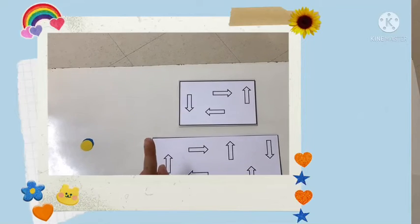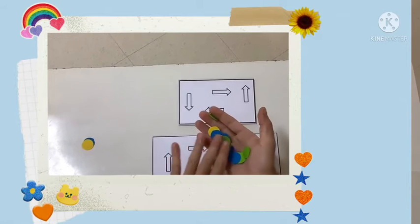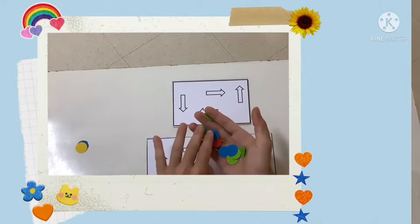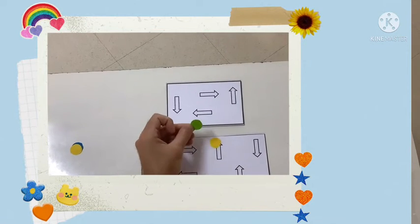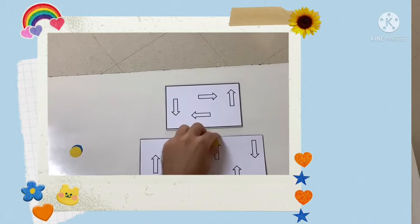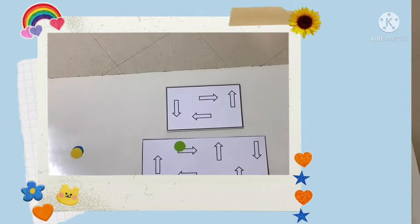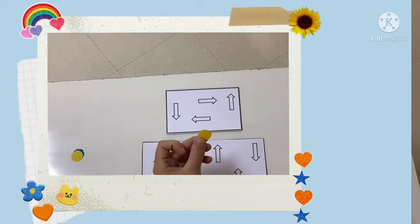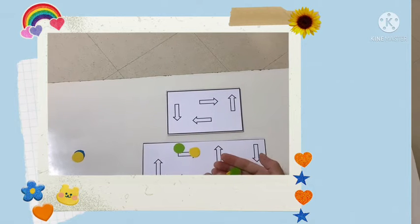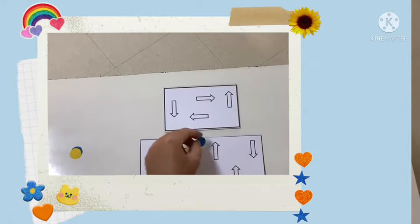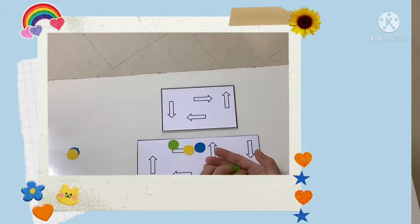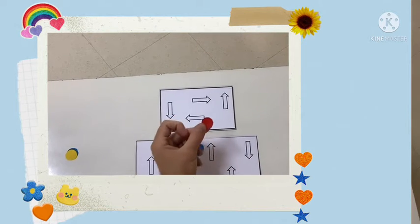First, let's get our colored circles. I have green, yellow, blue, and red.